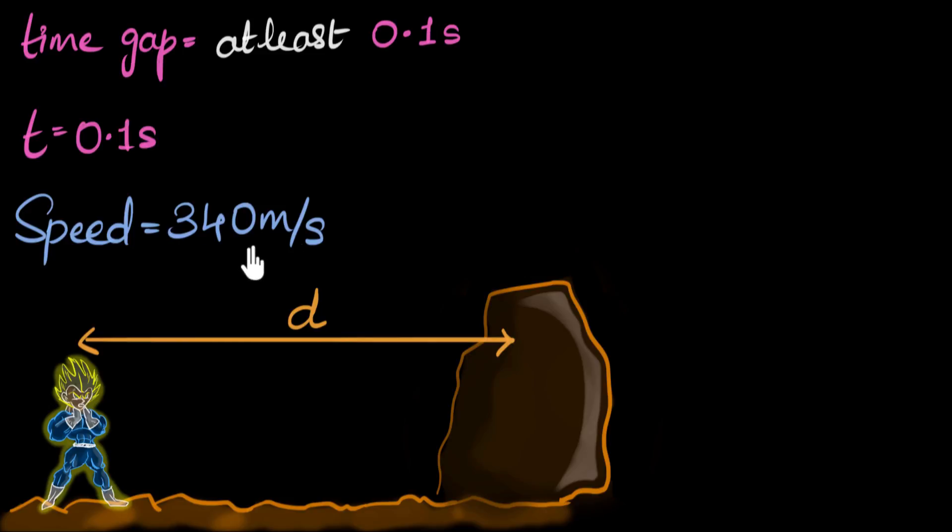So we know the speed of sound. And so knowing the speed and the time for which the sound is spending in the air, can we calculate the value of d? How do we do this?